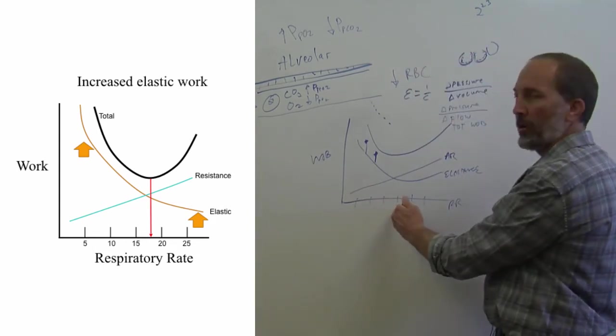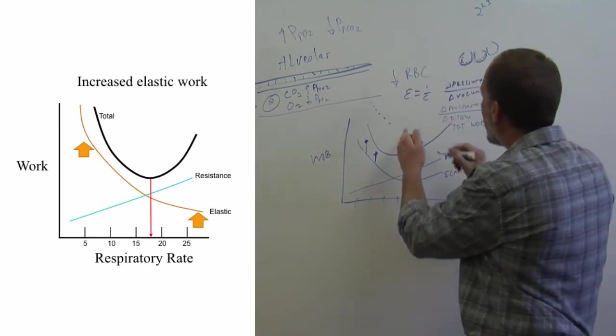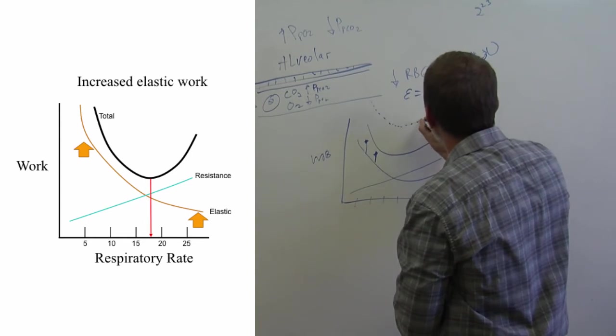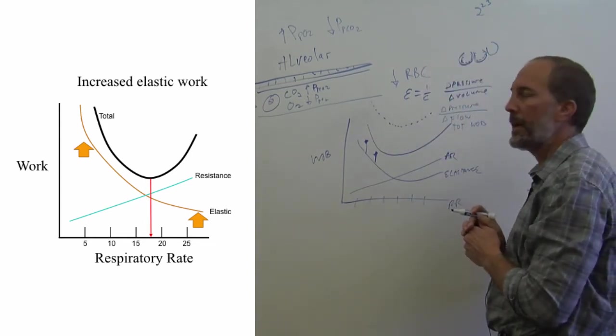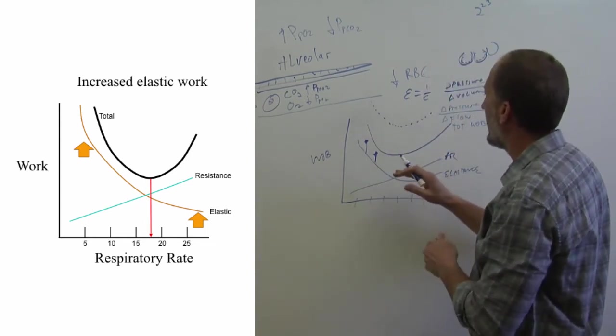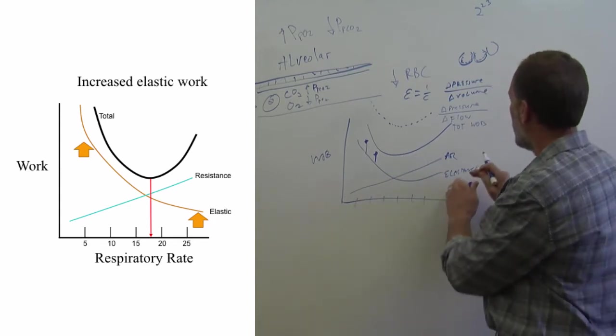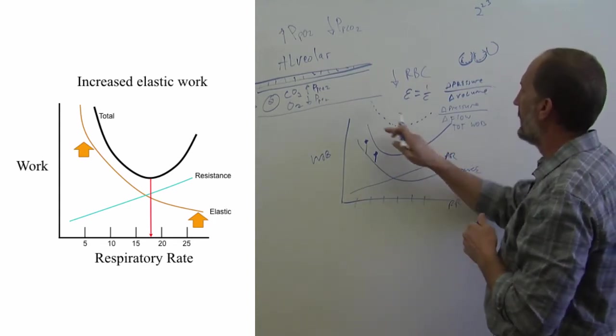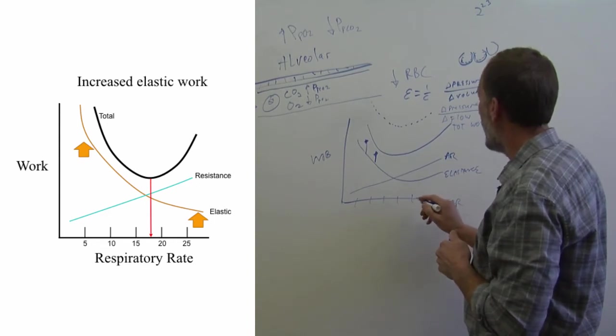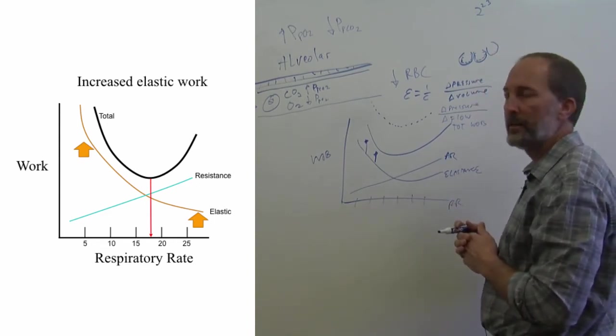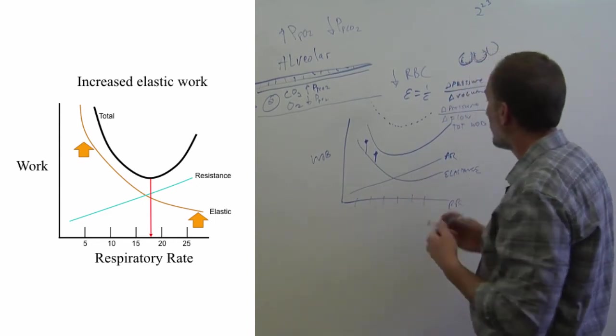And so their total work of breathing is going to be much higher early on at lower respiratory rates and then get a little bit easier and then go back up again, because your airway resistance starts coming back up again. So in someone who has stiff lungs, elastance is higher. They like to breathe at a little bit higher respiratory rate compared to someone who's normal.